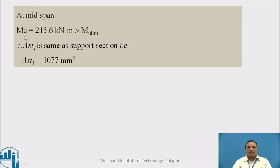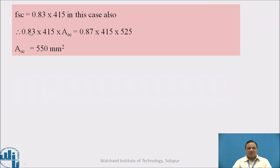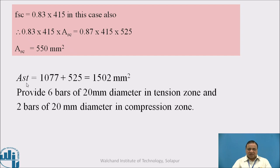At mid span, MU is different, this is sagging moment. MU at mid span is also greater than MU limit. Therefore AST1 is 1077 mm square and AST2 is 525 mm square because moment is less than support moment. FSC is determined from figure 23 of IS456. ASC equals 550 mm square and AST at bottom is AST1 plus AST2, equals 1502 mm square. Provide 6 bars of 20 mm diameter in tension zone and 2 bars of 20 mm in compression zone.